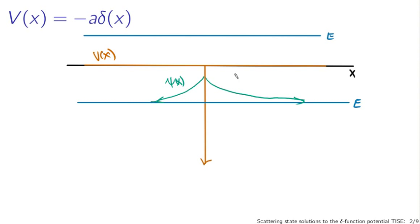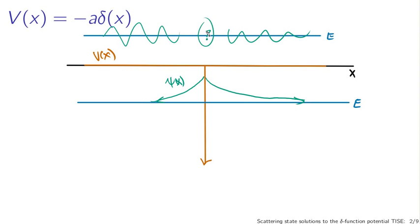So we're talking about solutions with energy E above zero. At regions away from the delta function we have basically the behavior of a free particle — we get traveling waves at regions away from the delta function, away from x equals zero. We don't really know what happens at the origin, but we know what our solutions should look like and we should be able to use boundary condition matching to figure out what happens at the origin.